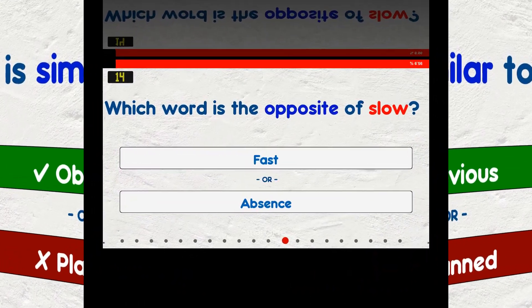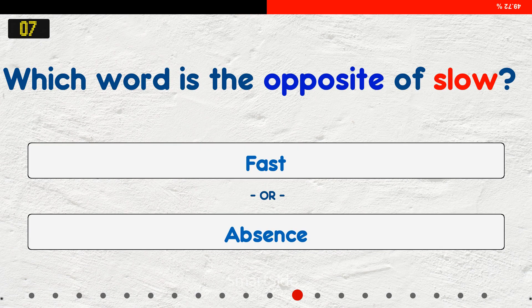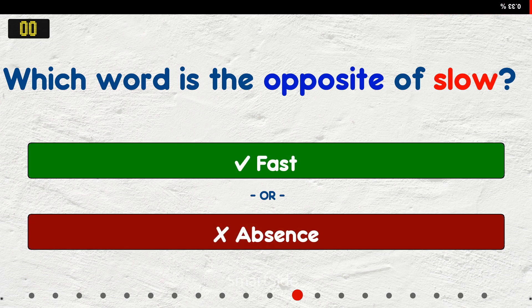Which word is the opposite of slow? A. Fast. B. Absence. The answer is fast.